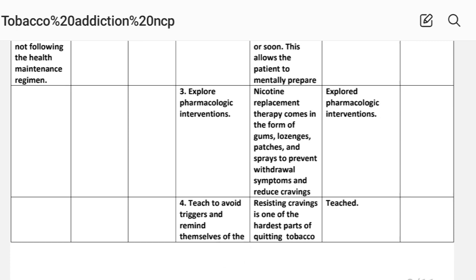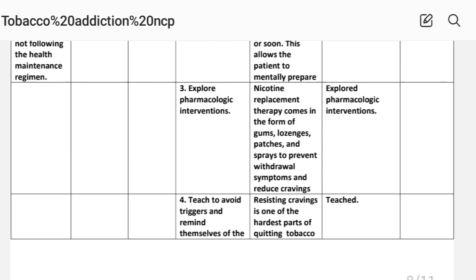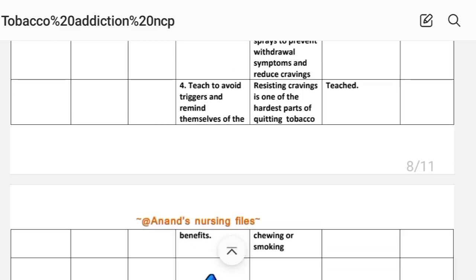Number three: explore pharmacological interventions. Rationale: local nicotine replacement therapy comes in the form of gums, lozenges, patches, and sprays to prevent withdrawal symptoms or reduce cravings. Implementation: explore pharmacological interventions. Number four: teach the patient to identify triggers and remind themselves of the benefits to resist cravings, as resisting cravings is one of the hardest parts of quitting tobacco.